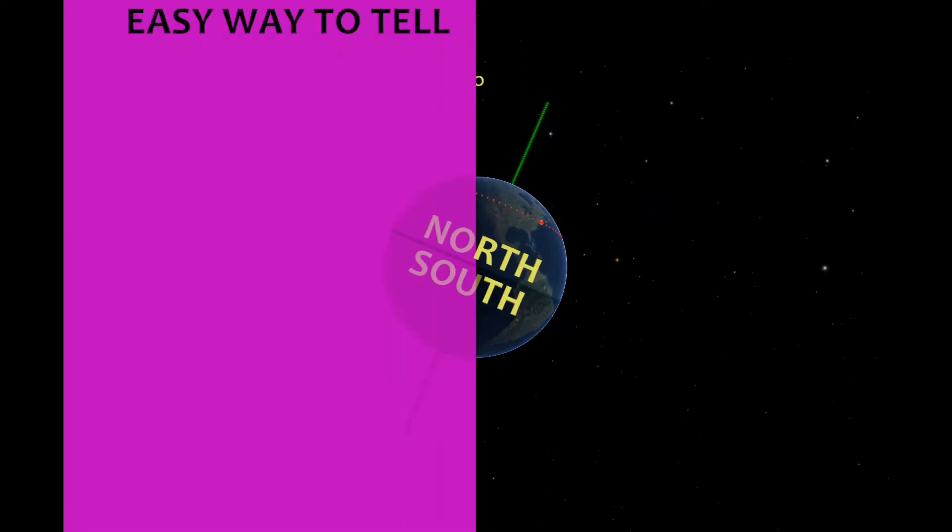An easy way to tell is that the northern axis is tilted into the daylight side of the Earth, which means the cities and countries of the northern hemisphere will get more direct sunlight and longer daytime hours.